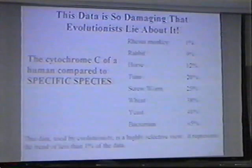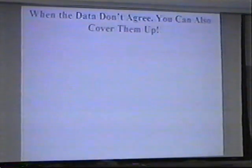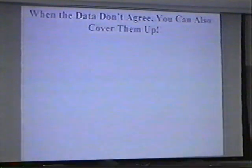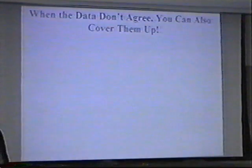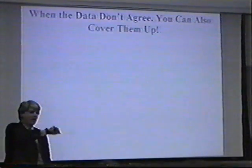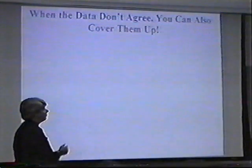This is an incredibly highly selective view of the data, representing less than 1%. So of course the thing you do is simply lie about it, because that's what you need to do if you want to convince people of your theory. Now there's another thing you can do with data when it doesn't agree with you: rather than lying about it, you can simply cover it up.